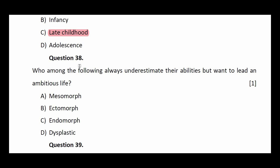Question number thirty-eight: who among the following always underestimate their abilities but want to lead an ambitious life? Options: mesomorph, ectomorph, endomorph, dysplastic.